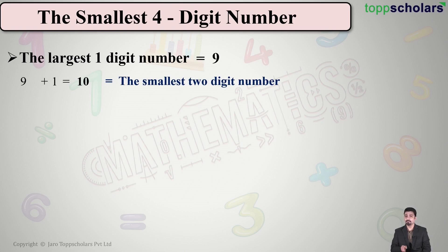So by taking the largest one-digit number and adding one to it, I got the smallest two-digit number. Similarly, the largest two-digit number will be 99. To this number, if we add one, what do I get?